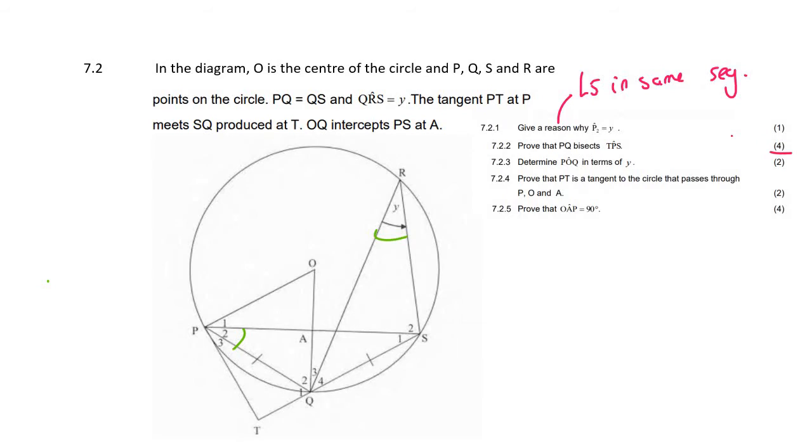Then the next one for four marks says, prove that PQ bisects angle TPS. So where's PQ? PQ is over here. TPS is here. So what this question means is prove that this pink line cuts these two exactly in half.